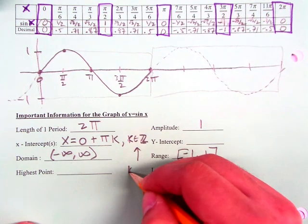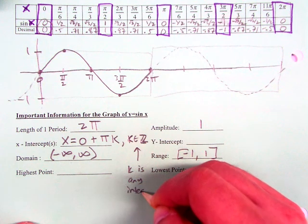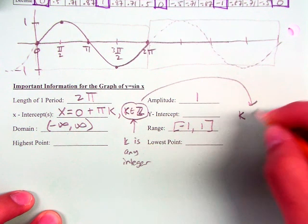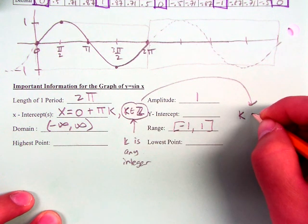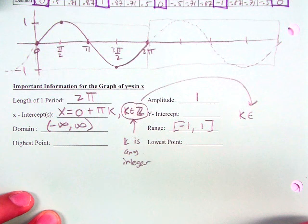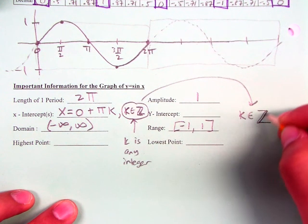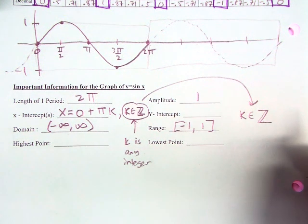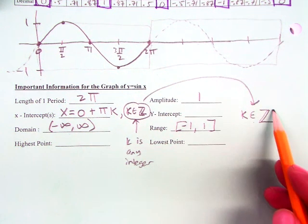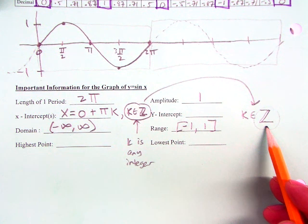Do you write all of that? You do. This means k can be any integer. This little epsilon stands for, or means, belongs to the set, or is a member of. This represents the entire set of integers. So 0, 1, 2, 3, 4, 5, and then all the negatives. Negative 1, negative 2, negative 3. So that's what this means.